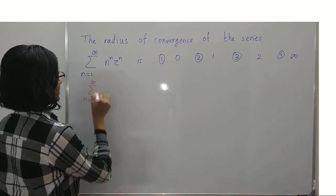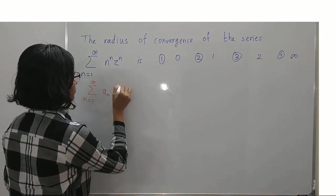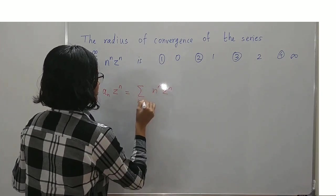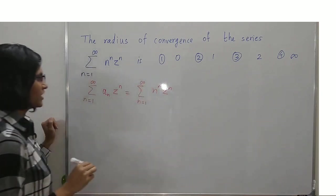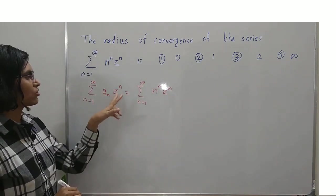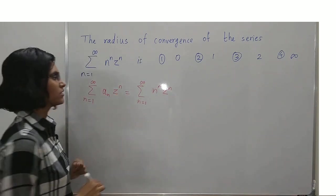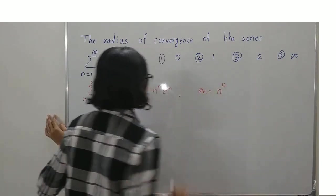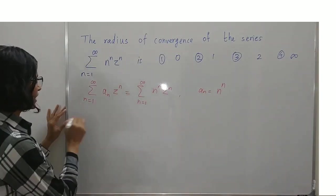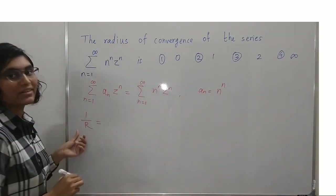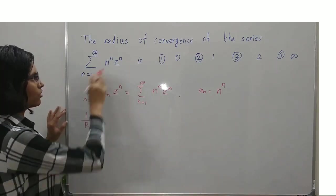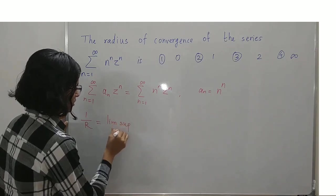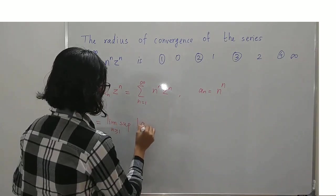Let us write the series as summation from 1 to infinity of a_n · z^n equal to the given series, where n runs from 1 to infinity. Comparing, we get a_n is equal to n^n. We know that 1 over r, where r is the radius of convergence, is equal to the limit supremum of |a_n|^(1/n).